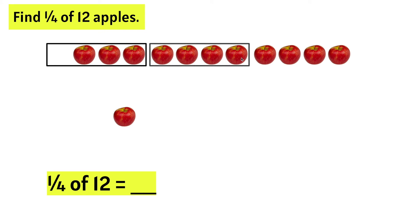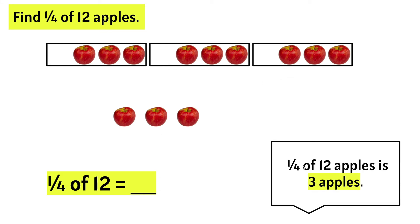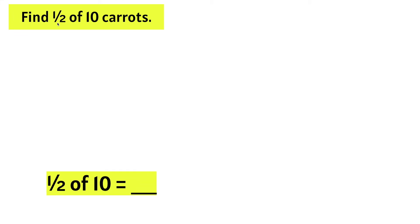Let's make another set of four apples. We need one of the four, or one-fourth. Here we have another set of four apples and we need one-fourth of them. We can say that one-fourth of 12 apples is one, two, three apples. So, one-fourth of 12 equals three.